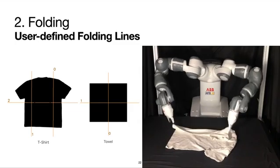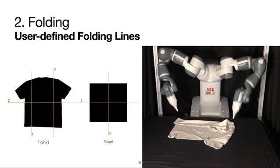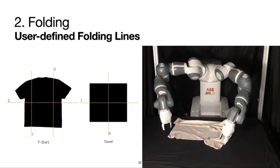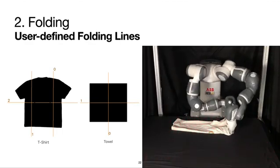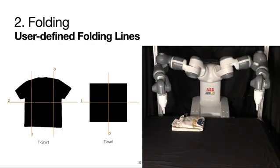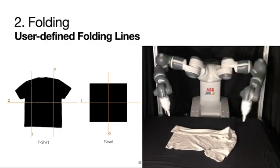Once the garment is sufficiently smooth, the robot is ready to fold it. The first approach we use allows the user to define garment-specific folding lines as a template. During execution, the robot will match the given template to the current orientation of the garment and follow the lines to fold.